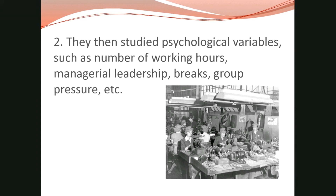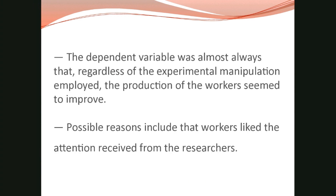The ideas this team developed about the social dynamics of groups in the work setting had lasting influence. The collection of data on labor-to-management relations and informal interactions among factory employees were all things they wanted to know more about. What the researchers found was that the dependent variable — the outcome of just about every experiment associated with Hawthorne — was that almost always, regardless of the experimental manipulation employed, the production of the workers seemed to improve. One big reason: workers liked or at least responded to the attention received from researchers.